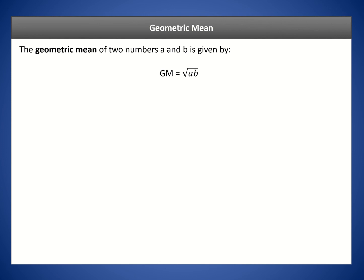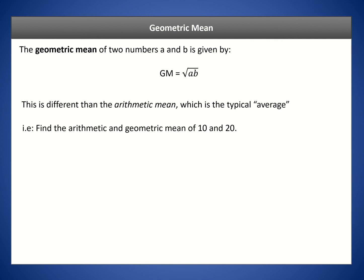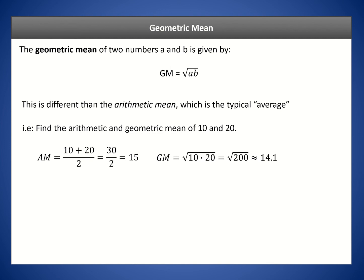The geometric mean of two numbers A and B is given by taking the square root of their product. This is different from the arithmetic mean, which is the regular average. For example, the arithmetic mean of 10 and 20 is adding them and dividing by 2, giving 15. The geometric mean is simply the square root of 10 times 20. Notice these values are fairly similar since both are types of averages.